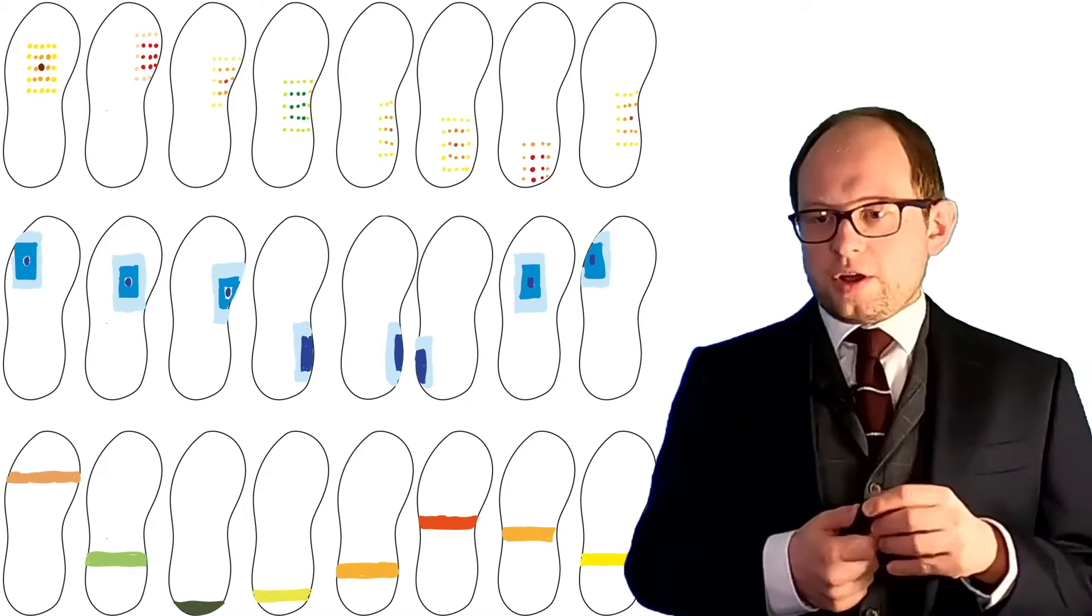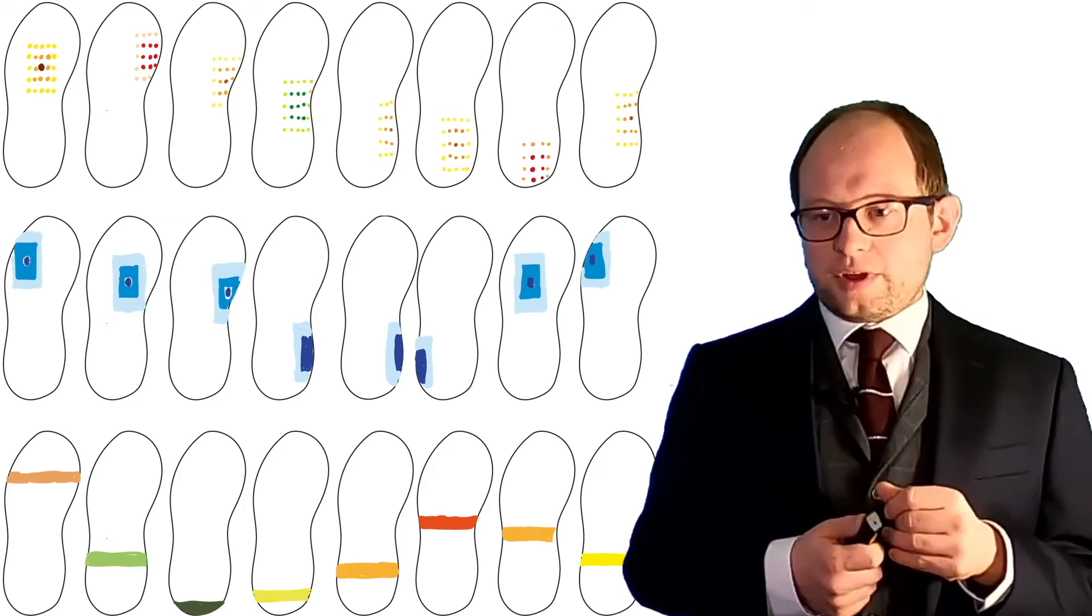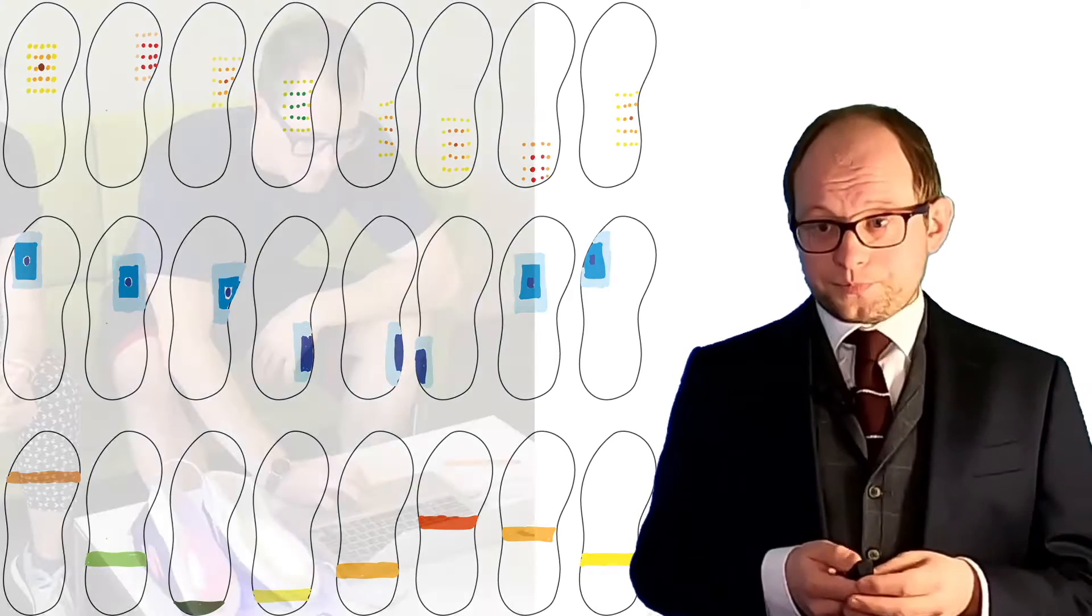In a study, we looked at how 20 participants ran around a little circuit that we made around our lab and later they used Graphite to look at the data, reflect on it and try to understand the different gait metrics that the sensor obtained during the run.